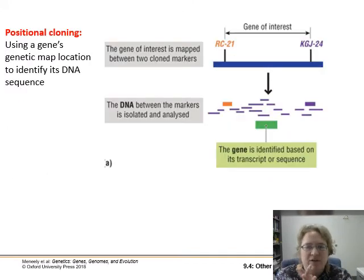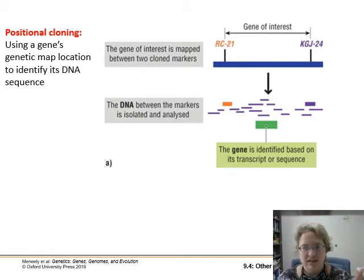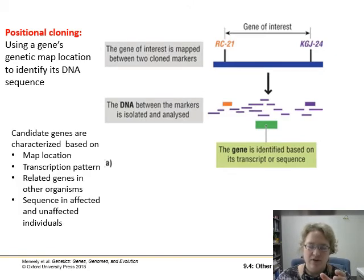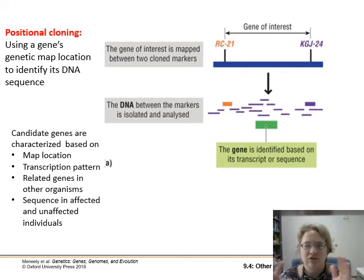Positional cloning gets interesting because once you've mapped where all the genes are in relation to each other, and you know that a gene is somewhere in between these two, you can use those known sequences on either side and start sequencing the DNA in between. Then you can run a program over that and predict open reading frames — genes usually have this structure — and search that sequence in order to find your gene of interest.